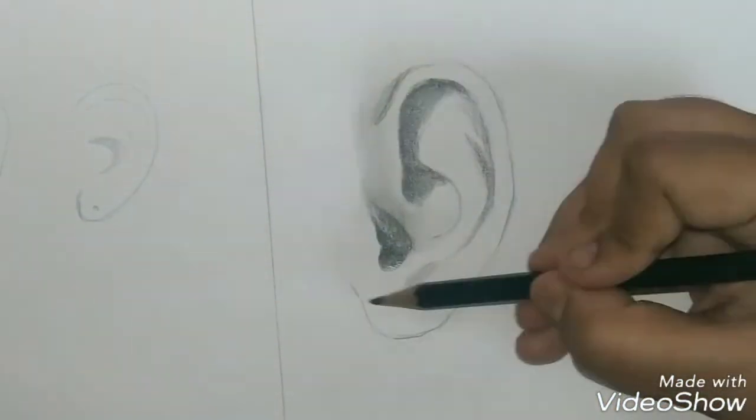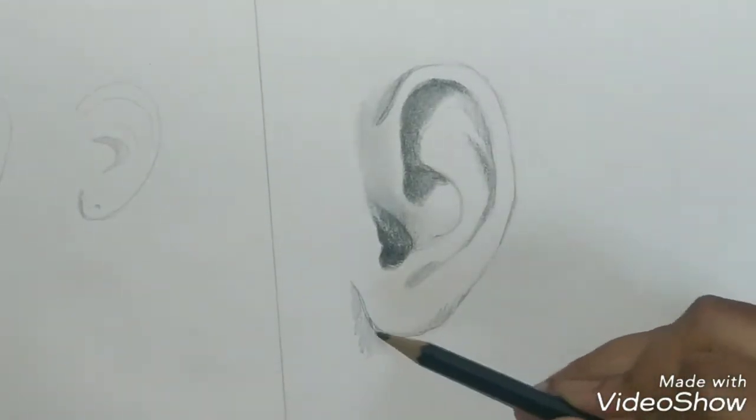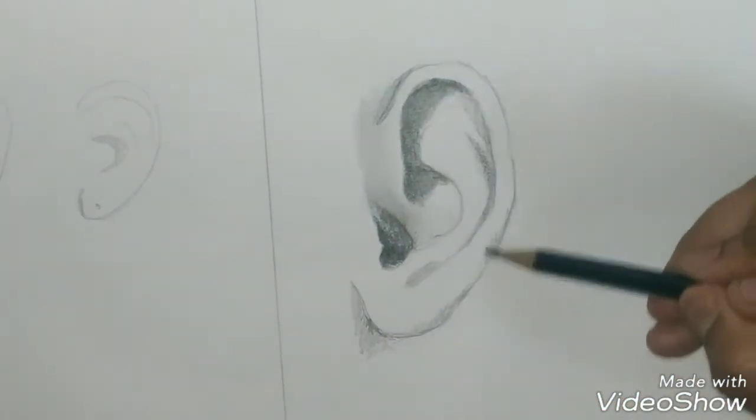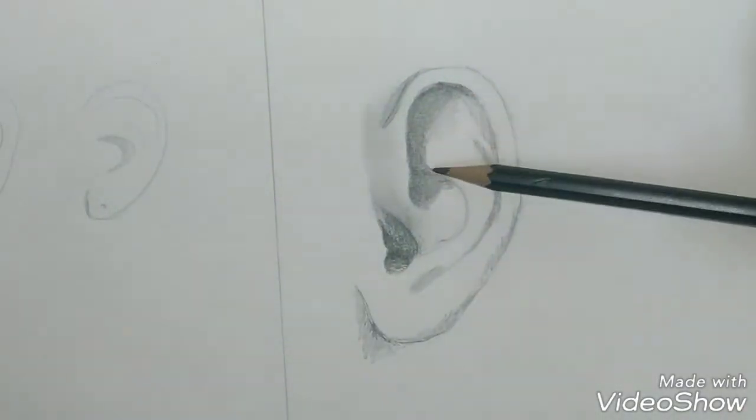Always keep in mind that the bumps are going to be lighter than the valleys. Valleys are going to be darker, and the rest of the ear is going to be in mid tones.